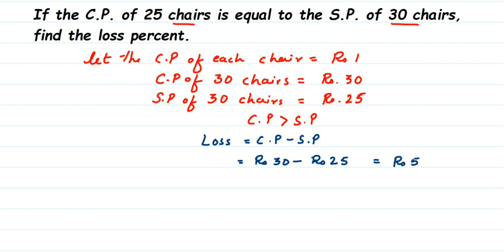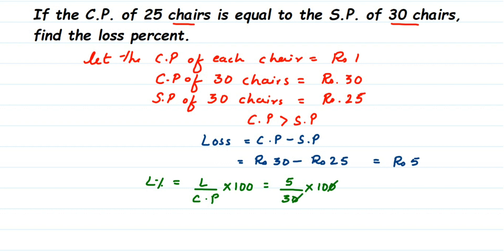Now we find the loss percentage. Loss percentage equals loss divided by cost price, multiplied by 100. We always compare with cost price. Substituting the values: loss is 5, cost price of 30 chairs is 30. So it's 5 upon 30 multiplied by 100. Cancelling the zeros, we get 50 upon 3. You can do your own cancellation but the answer will be the same — 50/3.